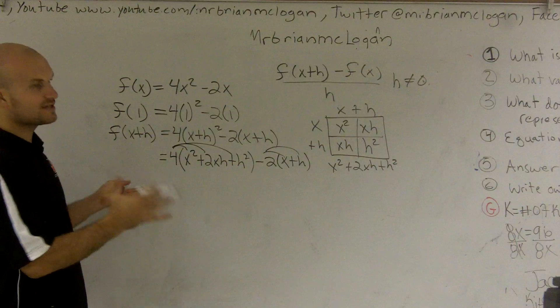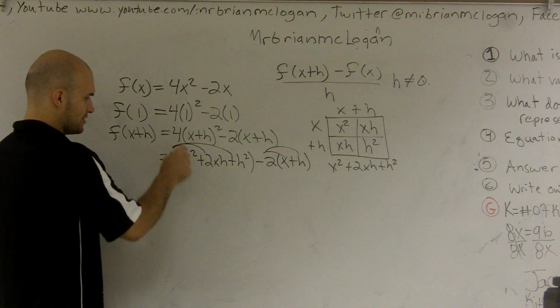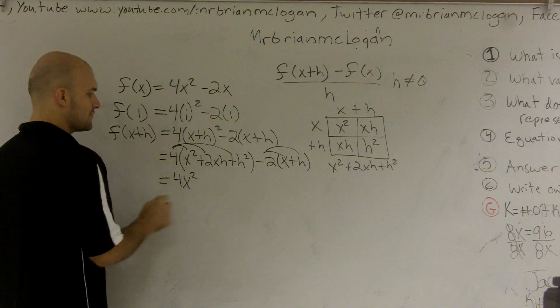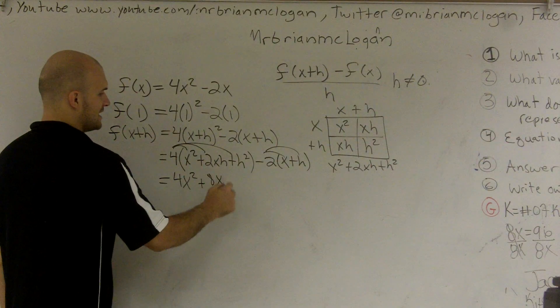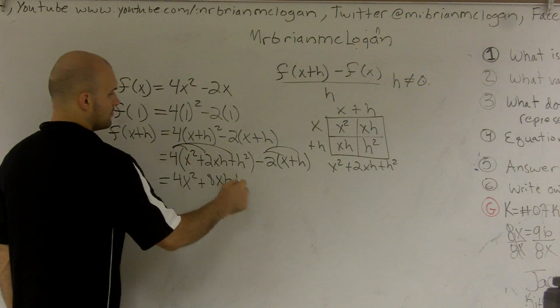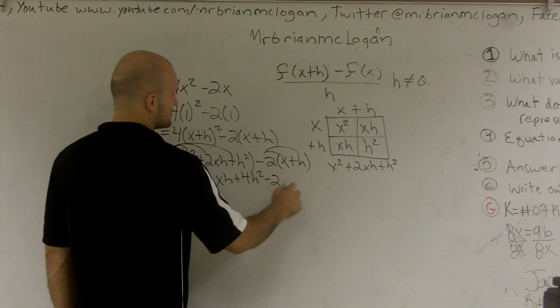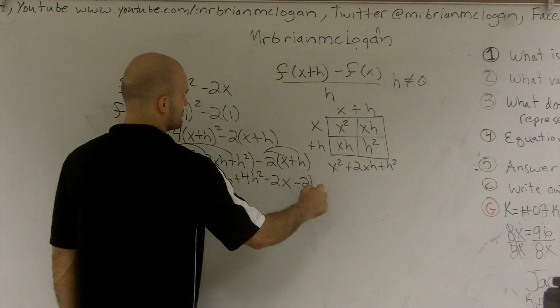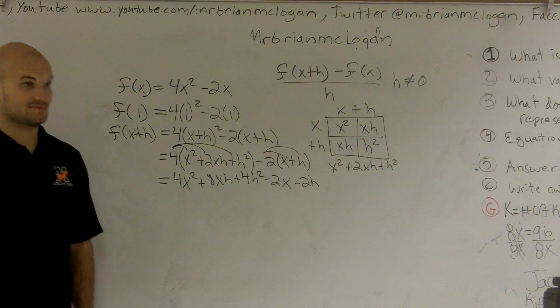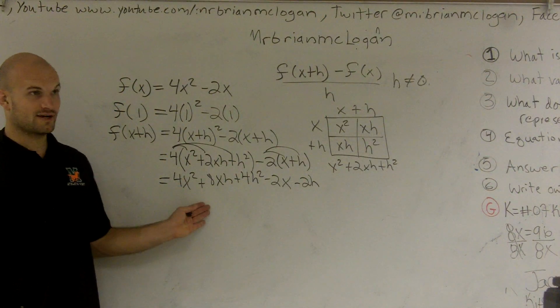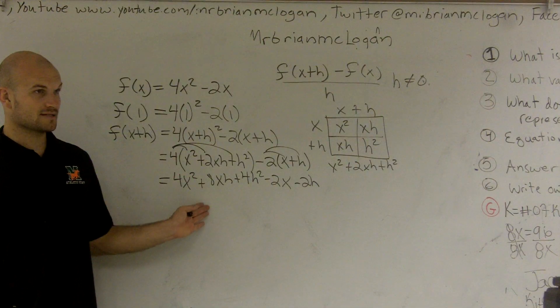And I know it's like crazy, but we're just following steps. So the distributive property, 4 times x squared is 4x squared plus 8xh plus 4h squared minus 2x minus 2h. Pretty big, isn't it? It's a lot. But do you see what I have there? Does that make sense? Yeah.